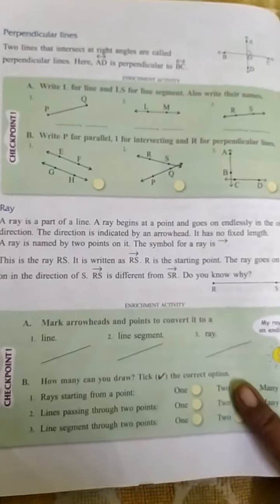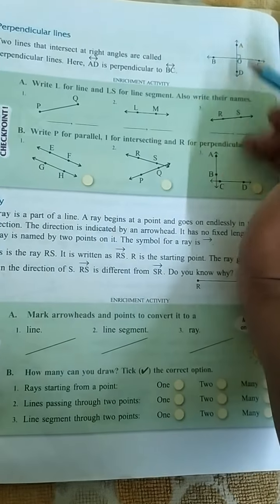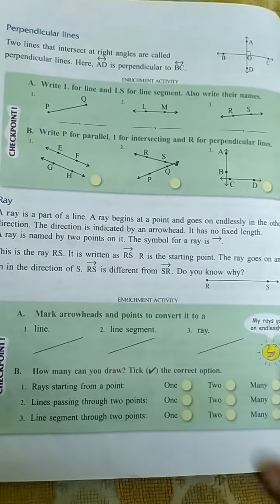So these are the basic concepts. Parallel lines and perpendicular lines. Two lines intersecting at right angle, we call them perpendicular lines.